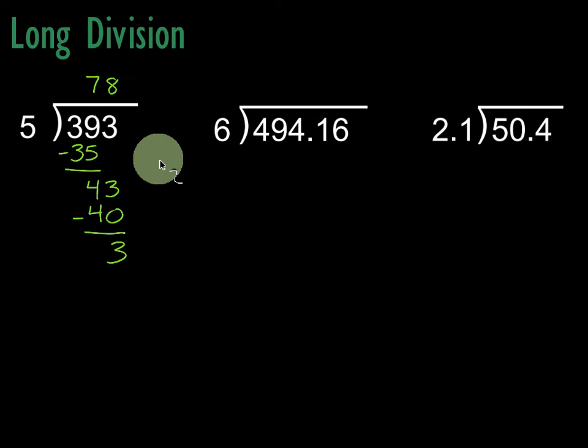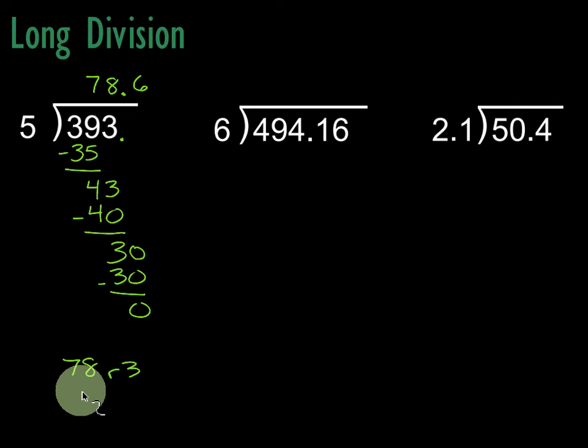A third way is to make it a decimal. We put a decimal here at the end of our number and in our answer, and bring down another 0. What can I multiply 5 by to get 30? 6. So 6 times 5 is 30, and 30 minus 30 is 0. Our answer is 78.6. But remember, we could also have written that as 78 remainder 3, or 78 and 3 fifths, or as the decimal 78.6.